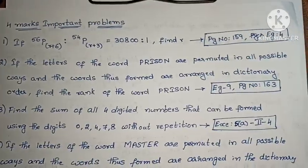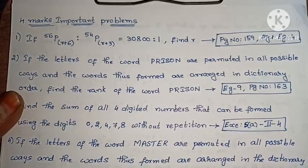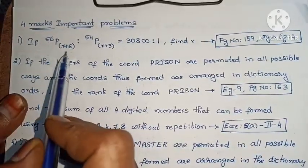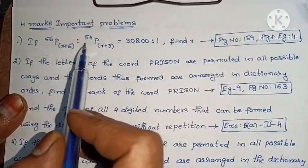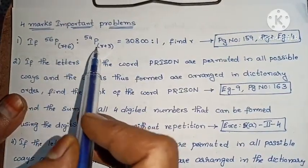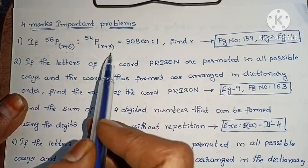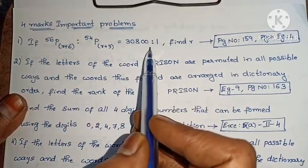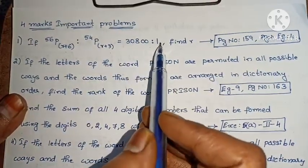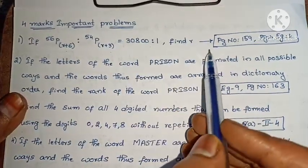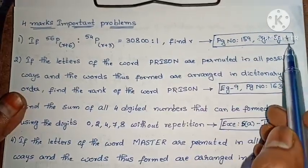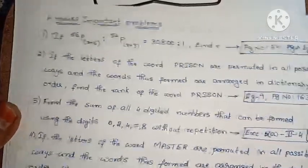Now we look at the 4-mark important problems. First: if 56P(r+1) to 54P(r+3) equals 30800 to 1, find R (Example 4, page 159).